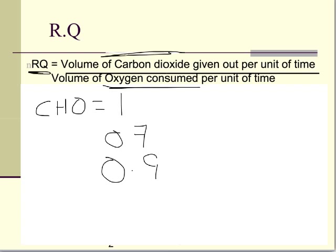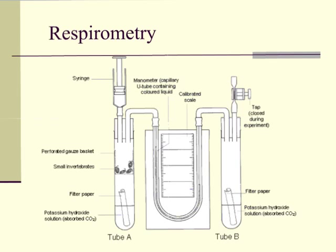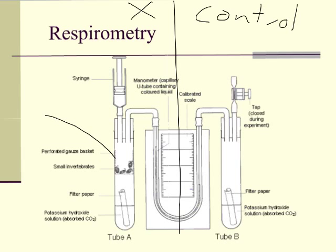This is what a respirometer looks like. There are two sides: an experimental side containing the organisms, and a control side which would just have glass beads — something that doesn't consume oxygen or produce carbon dioxide, but provides a control. The manometer is a thin tube containing fluid connecting the two sides.